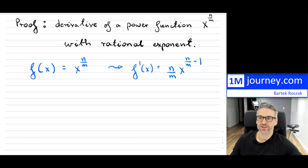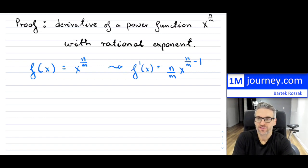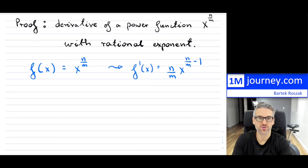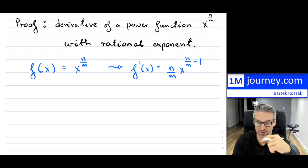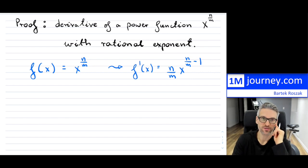Welcome back. We're proving the derivative of a power function x to an exponent, where the exponent is a rational exponent — meaning it's not a whole number.